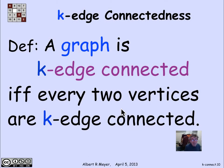For a whole graph, a whole graph is k-edge connected if every two vertices are k-edge connected.